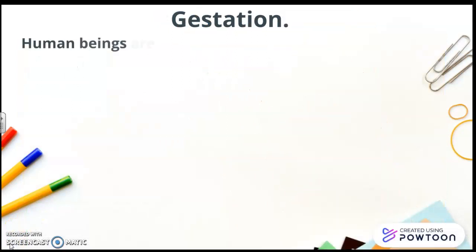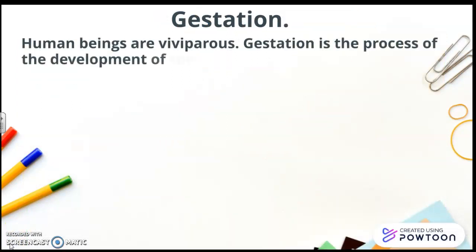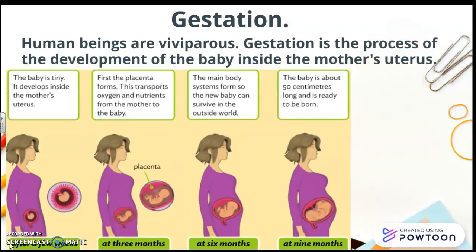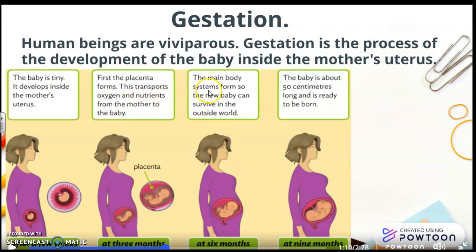Let's go now with the gestation. Human beings are viviparous. Gestation is the process of the development of the baby inside the mother's uterus. And here we are, the different stages in the pregnancy. After a few weeks, the baby is tiny. It develops inside the mother's uterus — it's really, really small. First, the placenta forms. This transports oxygen and nutrients from the mother to the baby. At six months, the main body systems form so the new baby can survive in the outside world. And finally, at nine months, the baby is about 50 cm long and is ready to be born.